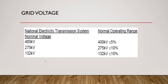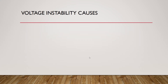As an example of voltage tolerance ranges: for a 400 kV grid voltage, we can vary it by plus or minus 5%; for 275 kV, it is plus or minus 10%; and for 132 kV, it is also plus or minus 10%. These are the allowable ranges within which we can change our voltage.